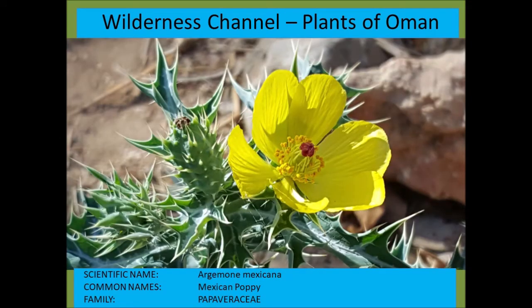Argemone mexicana — the Mexican poppy — has yellow flowers. There's another species, Argemone ochroleuca, with white flowers. From the Papaveraceae — the poppy family — a typical worldwide weed originally from South America.